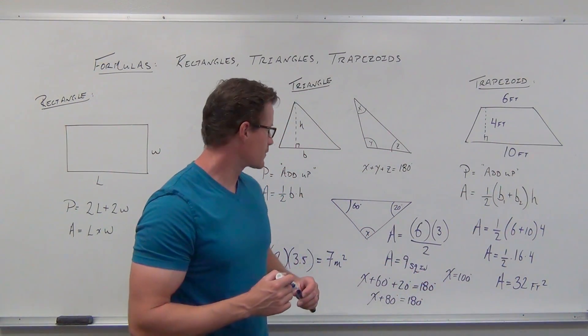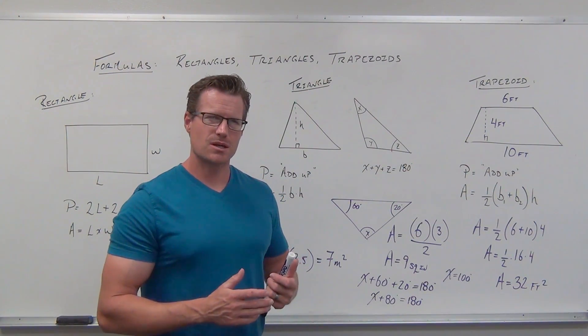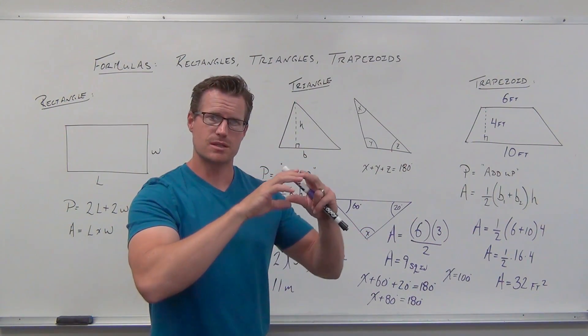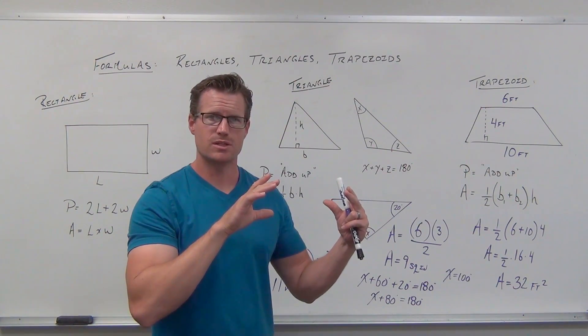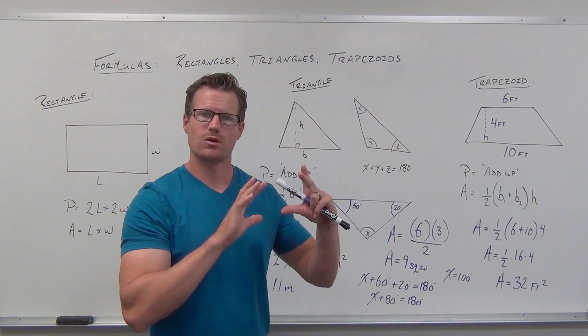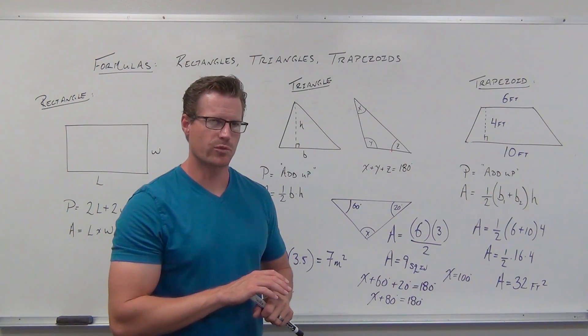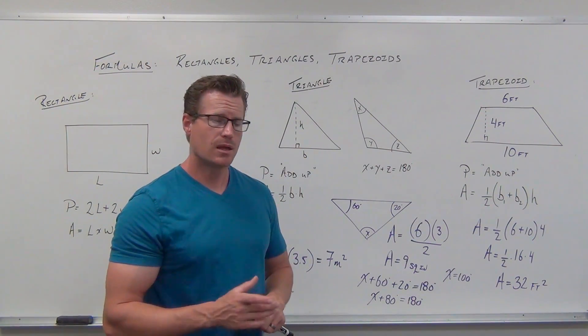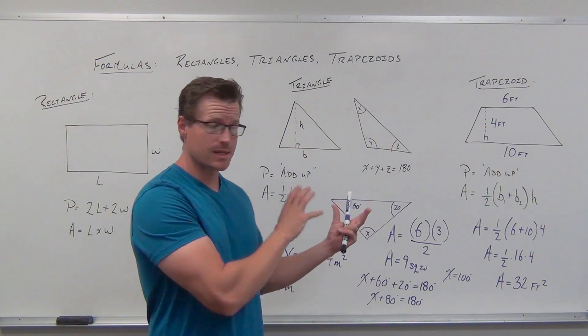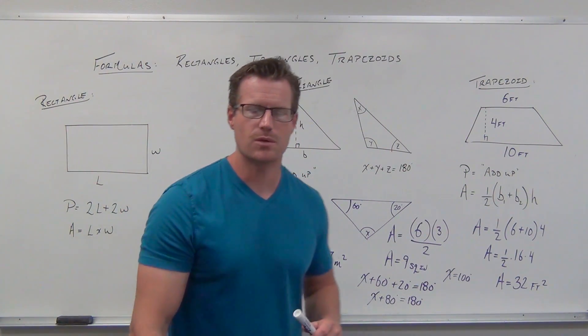Those are three basic shapes and their formulas. The big takeaways: perimeter goes around a figure and is always in linear units. Area is the surface you cover, always in squared units. Triangle angles add to 180 degrees on a flat surface. Get used to these formulas - we'll see them from time to time. Next, we'll talk about circles and more complex shapes that combine these ideas, then cylinders and rectangular prisms.